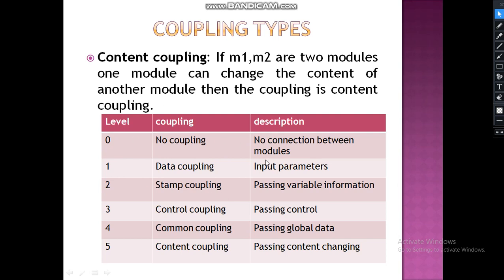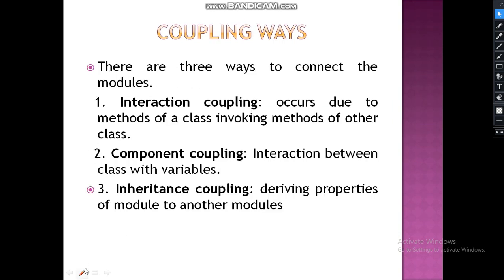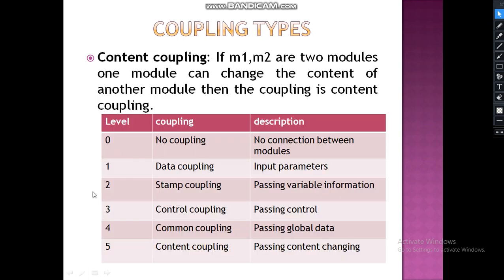The table describes the levels of coupling. If no coupling, the level is zero. Data coupling level is one. Stamp coupling is two. Control coupling is three. Common coupling is four. Content coupling is five. There are mainly three types: no coupling, low coupling, and high coupling. Zero represents no coupling and five represents high coupling.